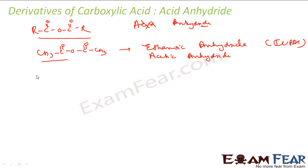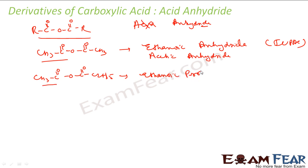For a mixed anhydride with two different acid groups on each side, the IUPAC name lists both acids alphabetically and replaces 'acid' with 'anhydride'. For example, ethanoic propanoic anhydride — ethanoic comes first because 'e' comes before 'p' alphabetically. The corresponding common name would be acetic propionic anhydride, since acetic and propionic are the common names for those acids.